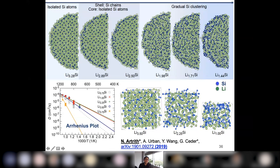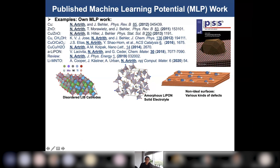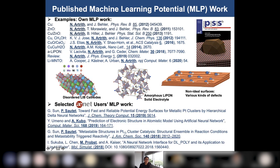Those were two examples of my machine learning potential work. We also have many more materials, including cathode disordered materials for lithium cathodes, LIPON amorphous solid electrolytes, and defect structures of copper surfaces. Using our AENET code, we also support many different users and scientists who have achieved very nice results for their own work.